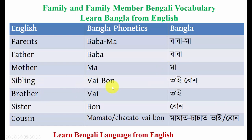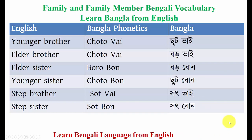Sibling means 'bhai bon.' Brother means 'bhai' and sister means 'bon.' Cousin means 'mama to' or 'chacha to bhai bon' — your cousin can be the son of your uncle. Younger brother in Bengali is 'choto bhai.'